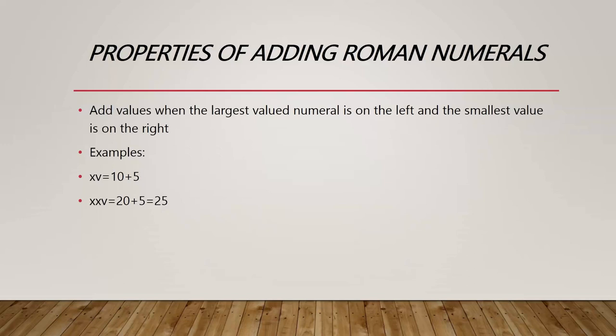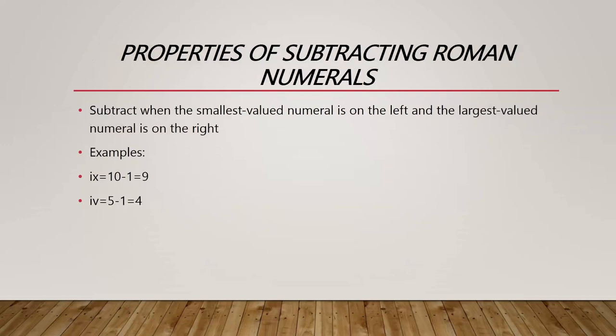When the smaller value is on the left, we subtract. For IX, I is smaller than X, so we subtract: 10 minus 1 equals 9. For IV, the V is larger than I, so we subtract: 5 minus 1 equals 4.